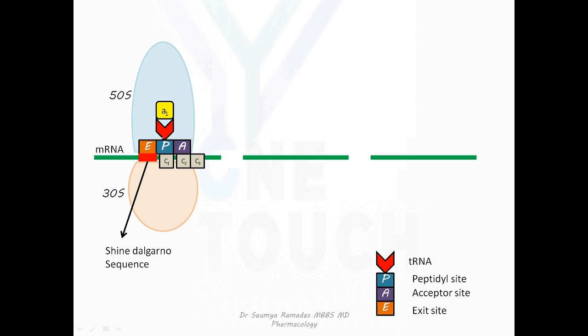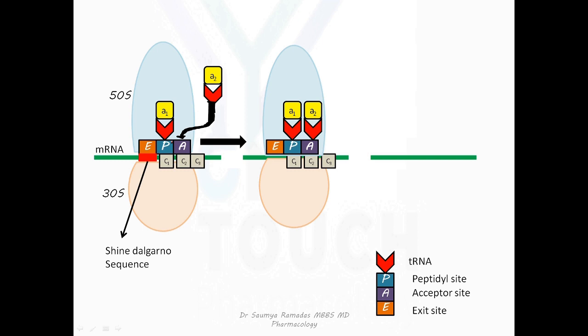Next, following the attachment of A1 to the peptidyl site, a new amino acid A2 is brought by a new tRNA, which is complementary to the codon C2. Now, this A2 attaches at the acceptor site. Now, there is a peptide bond formation between the amino acid A1 and A2, following which A1 is transferred to A2. Now, the peptidyl site is free and both amino acids are in the A site. Following this, the ribosome moves forward by one codon.